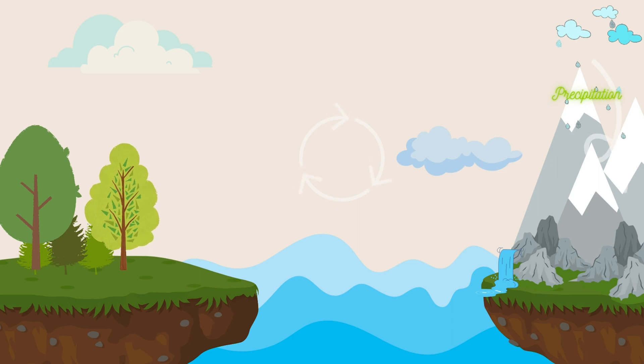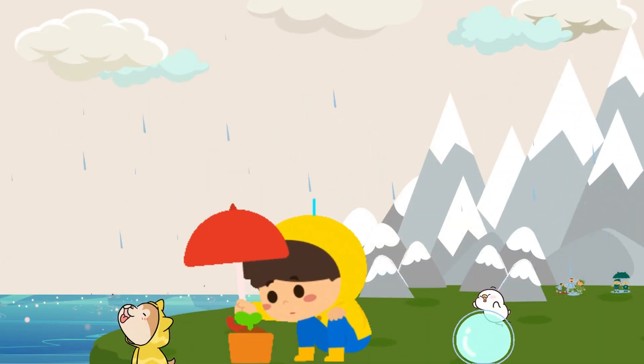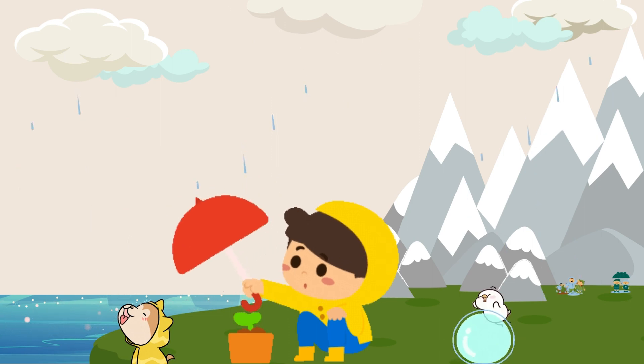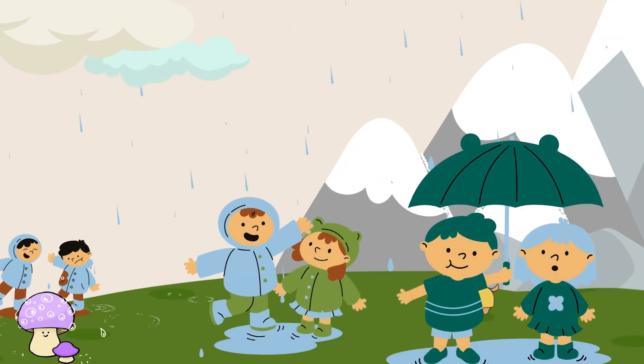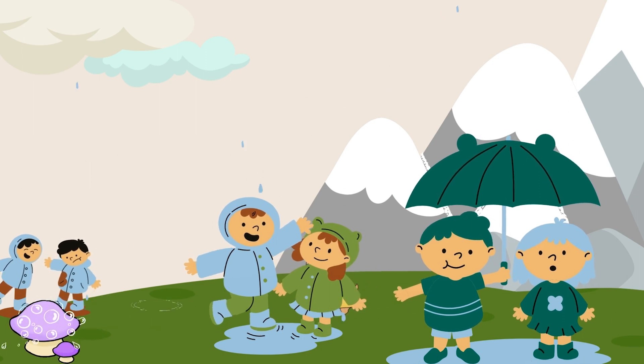Now, when the clouds become too heavy, they start to fall down as rain or snow, which is called precipitation. And this is the time when we all can play in the rain, mud, or snow with our friends.